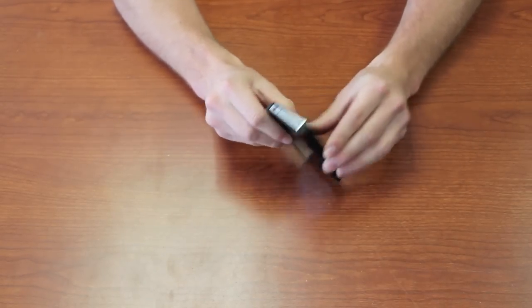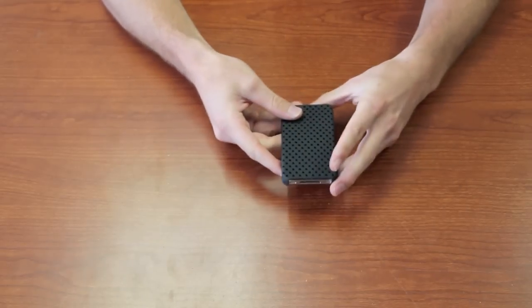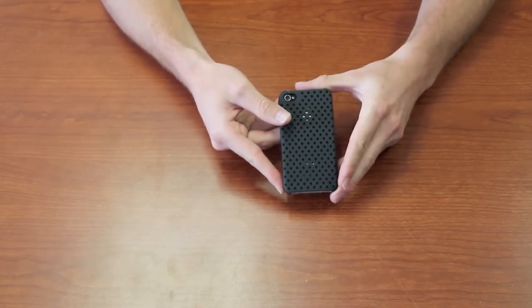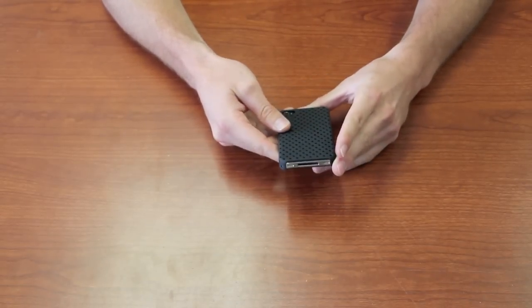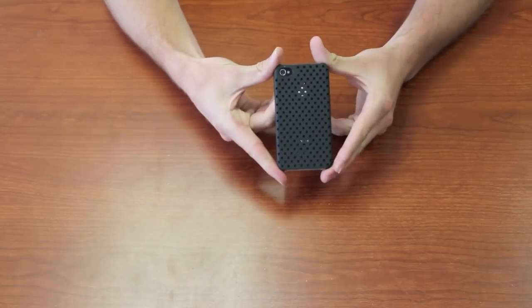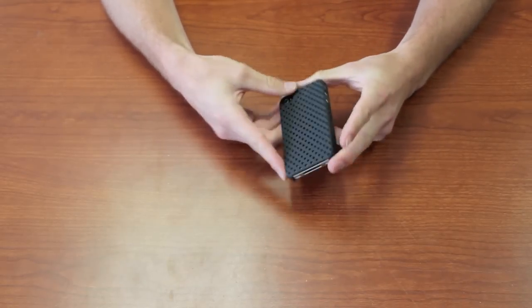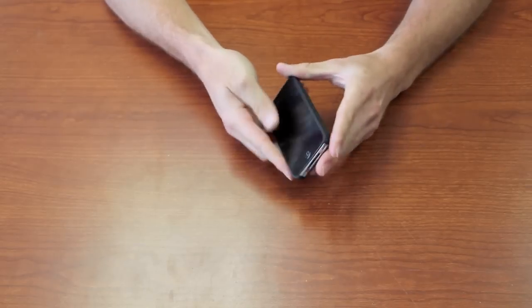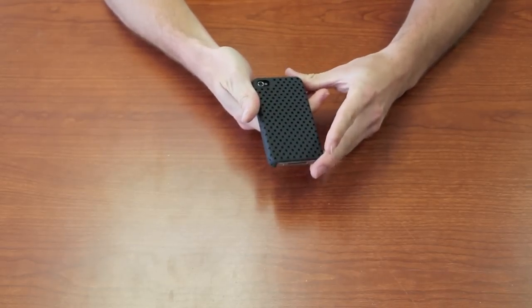The cool thing about the perforated snap case is the fact that it's perforated. It is a little bit lighter than the typical snap case and it just has a really cool look to it. It comes in black and white. Kind of a stylish version of the Incase snap case. I like it.